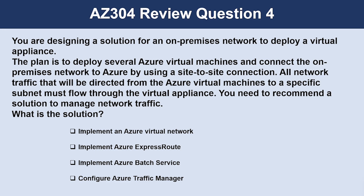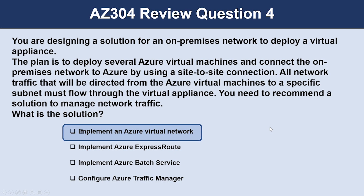Question number four. You are designing a solution for an on-premises network to deploy a virtual appliance. The plan is to deploy several Azure virtual machines and connect the on-premises network to Azure by using a site-to-site connection. All network traffic directed from the Azure virtual machines to a specific subnet must flow through the Azure virtual appliance. You need to recommend a solution to manage network traffic. The correct answer is implement an Azure virtual network. Azure virtual network manages user-defined routes, or UDRs. Another possible solution is to configure an Azure routing table to use Azure forced tunneling.